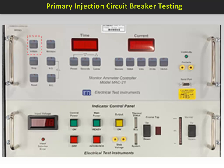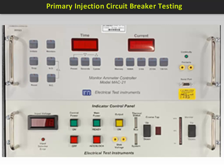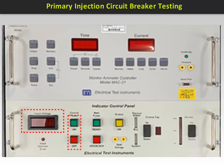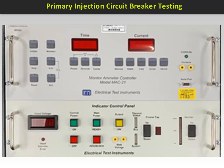Here you'll find the initiate key to start the test. Below that is the stop button, and right below that is the pause button. A serial port is located here for connection to a computer. The lower control panel houses the input voltage display. Control power on and off illuminated buttons are here. The main power switch and ready indicating light are positioned here.